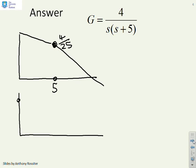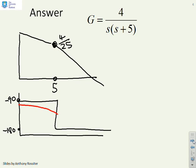What about the phase? Because we've got an integrator, the phase will start at minus 90 and finish at minus 180, so we're going to have a phase plot that looks somewhat like that. Next, let's imagine what the Nyquist diagram is going to look like.